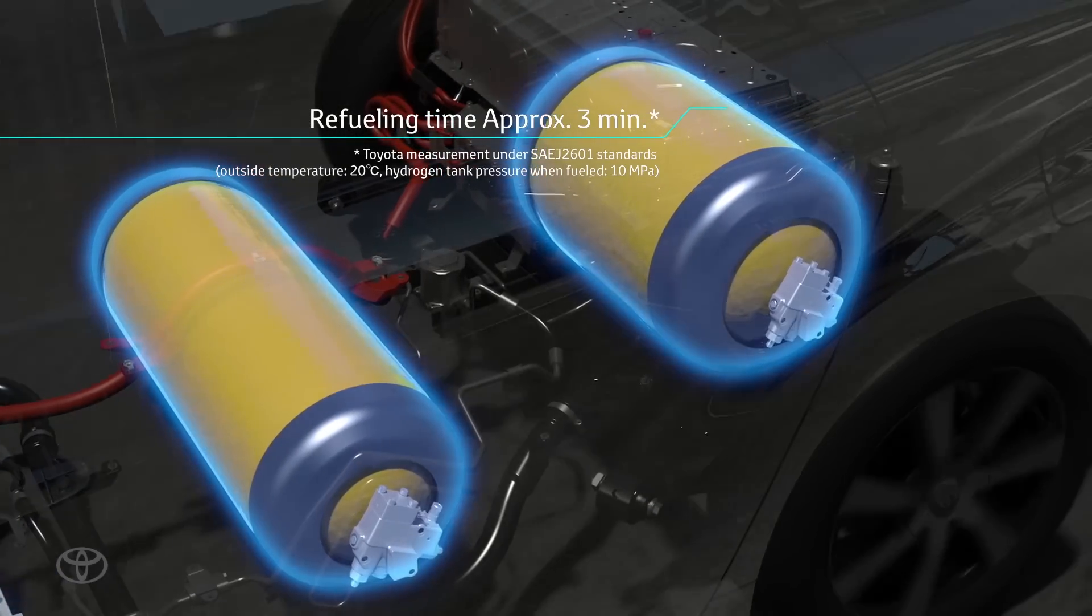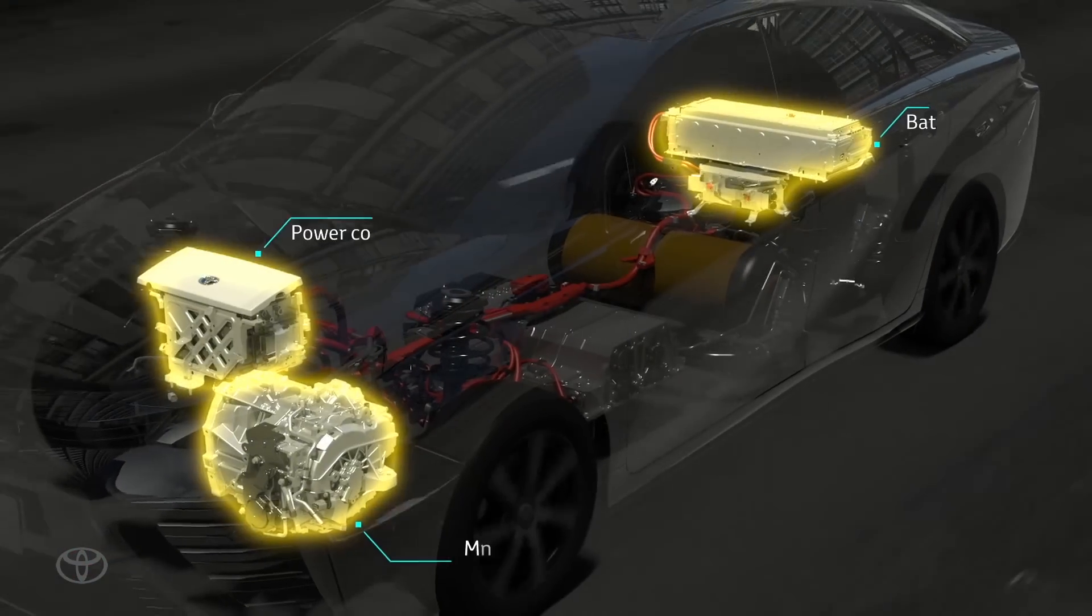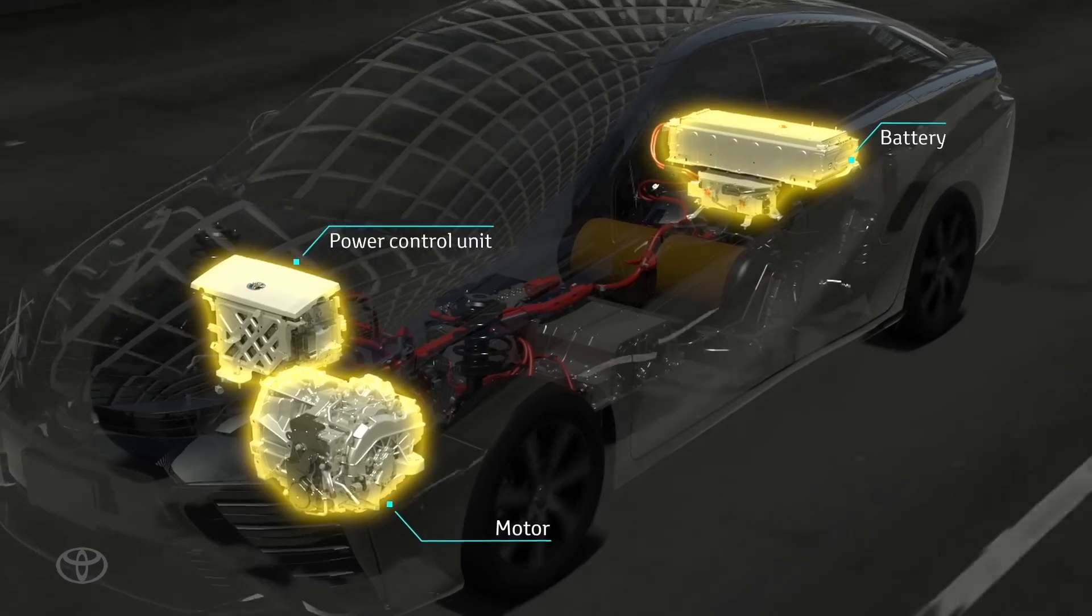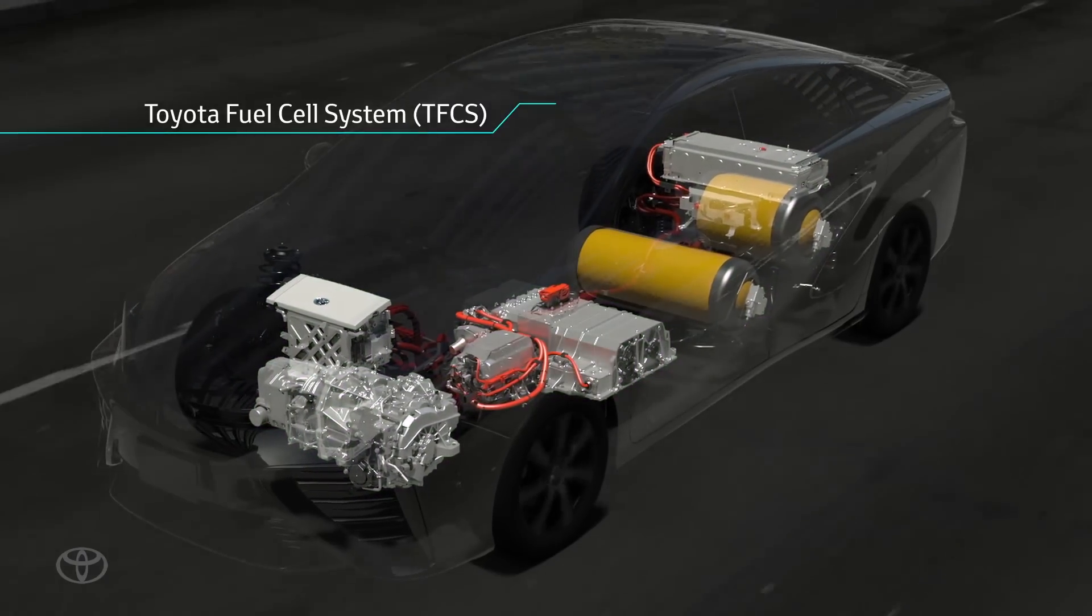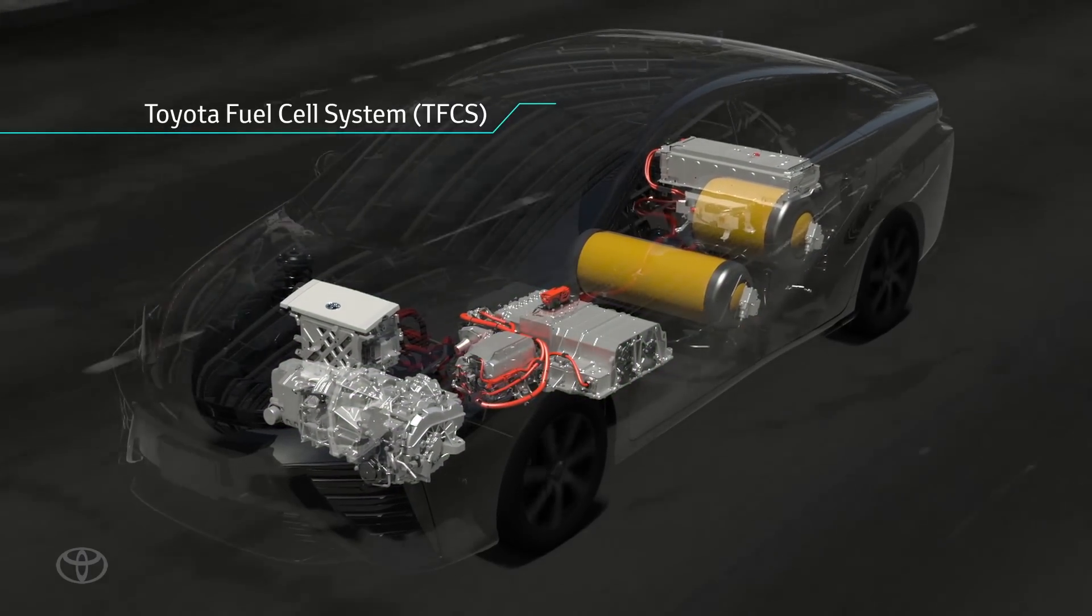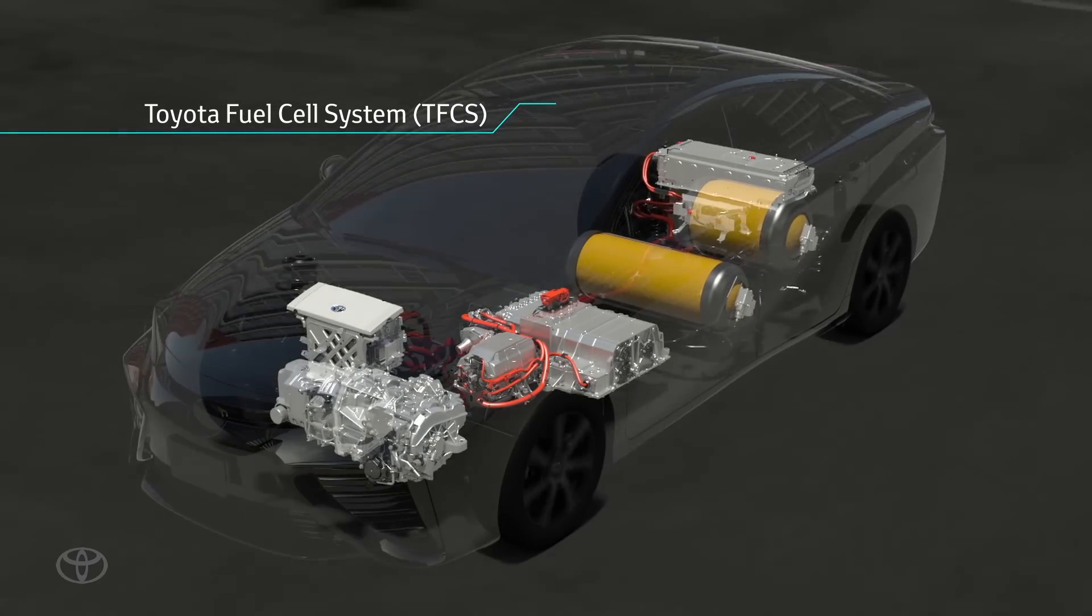Leveraging Toyota's hybrid vehicle technology, the power control unit manages the fuel cell output power and battery power with detailed precision. This innovative FC unit and HV technology combination makes the Toyota fuel cell system.